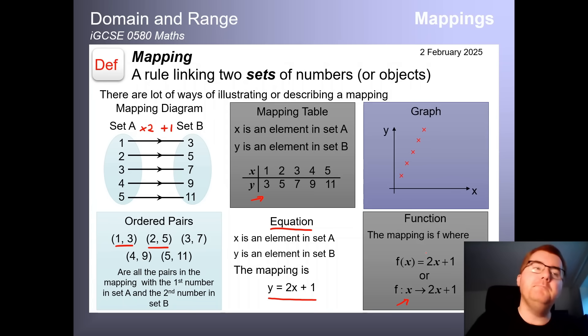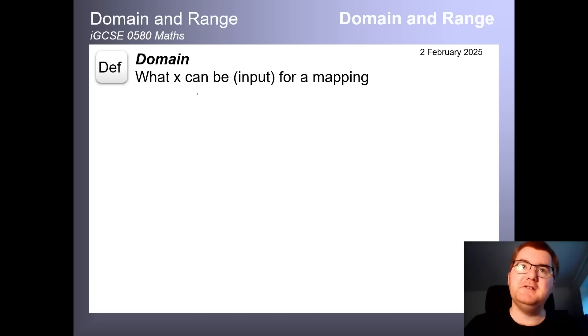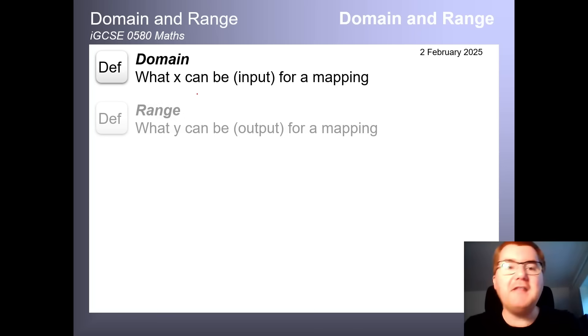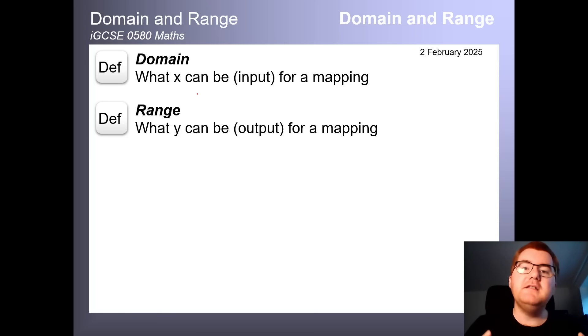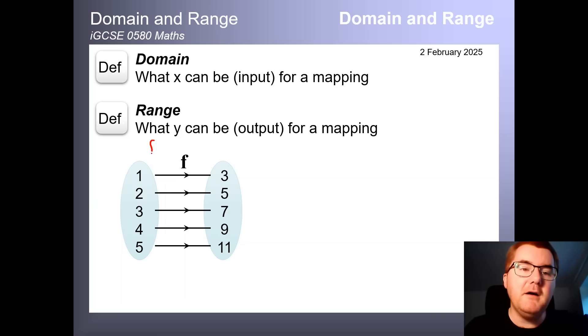Essentially, all we do is we just go from one thing on the left hand side to one thing on the right hand side, or we're also allowed to take two things on the left hand side and go one on the right hand side. Now, where does domain and range fit into this? All the domain is, is what x can be. So what the values on the left hand side can be for the mapping, and the range is what y can be. So what can the numbers be on the right hand side? So if we take a nice straightforward example, our function going from 1 to 3, 2 to 5, 3 to 7, 4 to 9, 5 to 11. The domain of this function is simply the numbers on the left hand side, 1, 2, 3, 4 and 5.